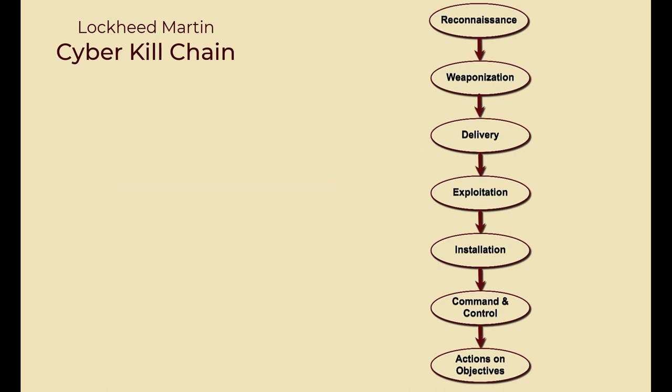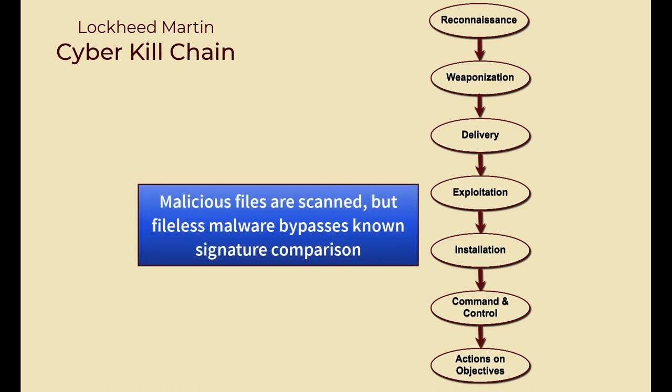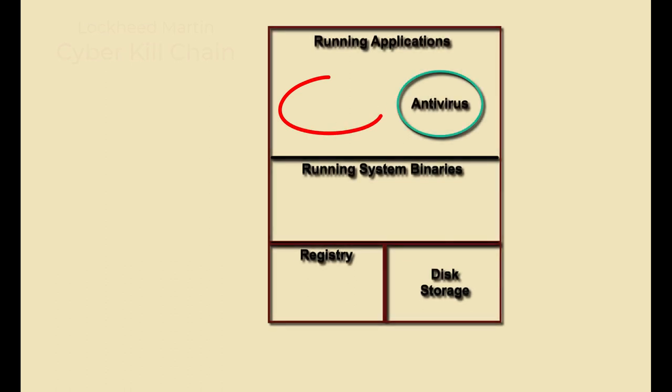This is where things begin to differ between file-based and fileless malware. When a TA needs to install files to start the system compromise, they're scanned as they are written to disk or loaded into RAM, scanned by antivirus. If one or more of the files in the package matches a known malicious file signature, it's blocked or quarantined by the antivirus. When a fileless payload is sent, it goes directly to RAM, bypassing the file scanning process. Some fileless payloads will write code to the Windows registry in order to reload after a reboot, ensuring persistence.